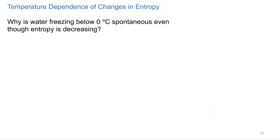Let's start combining what we're learning about now — entropy and enthalpy — which we know is going to have a big play in determining whether or not something is spontaneous. The question here would be: why is water freezing below zero degrees Celsius spontaneous, even though entropy is decreasing?